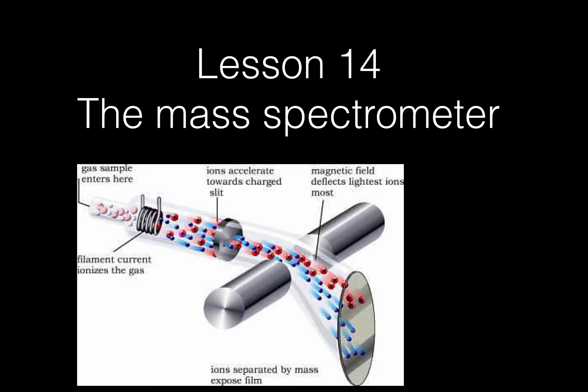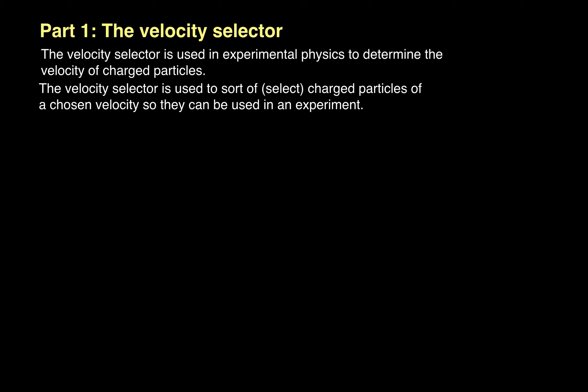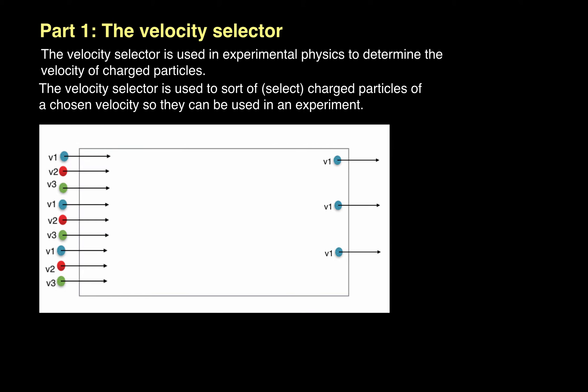Lesson 14: The Mass Spectrometer, Part 1 — The Velocity Selector. A velocity selector is used in experimental physics to determine the velocity of charged particles. It is used to sort out or select charged particles of a chosen velocity so that they can be used in an experiment. Picture the velocity selector like a box where you send a whole bunch of different charged particles with different velocities in, and you would only get particles of a particular velocity out.